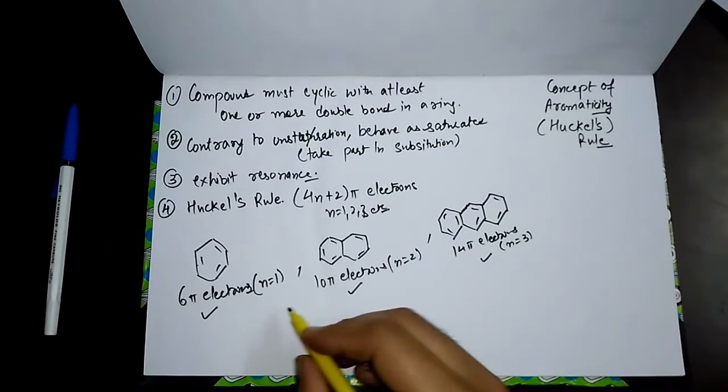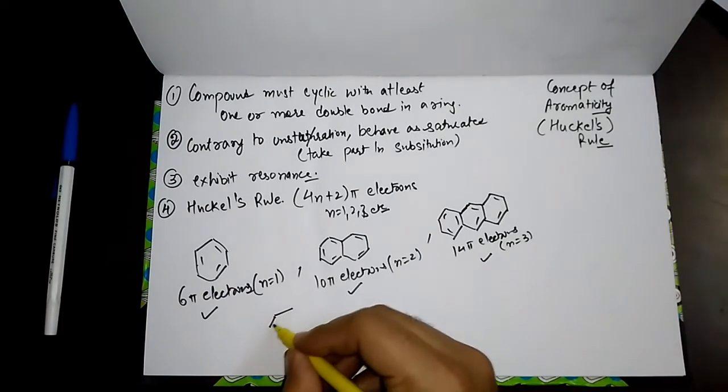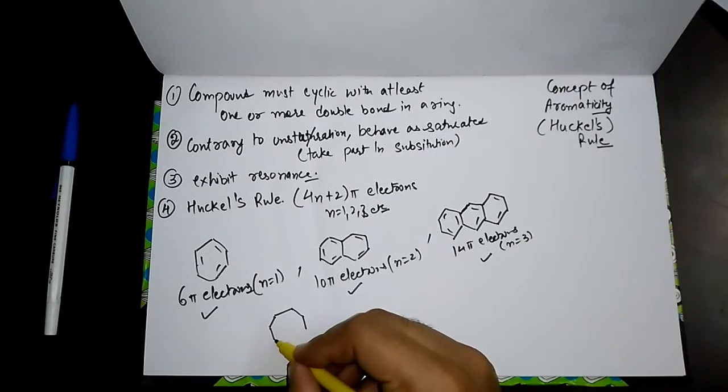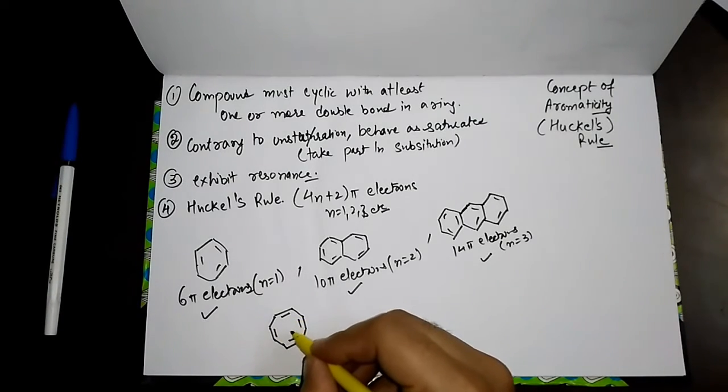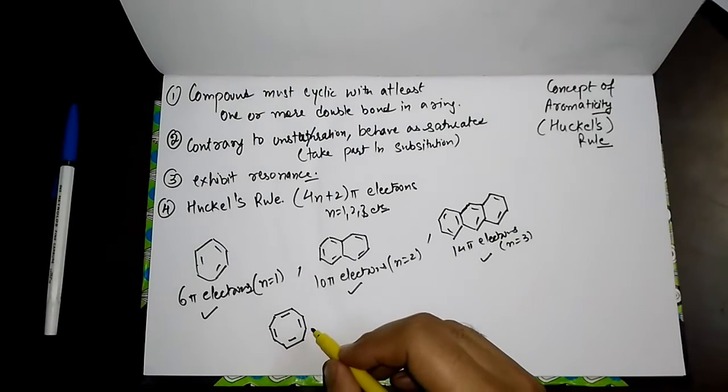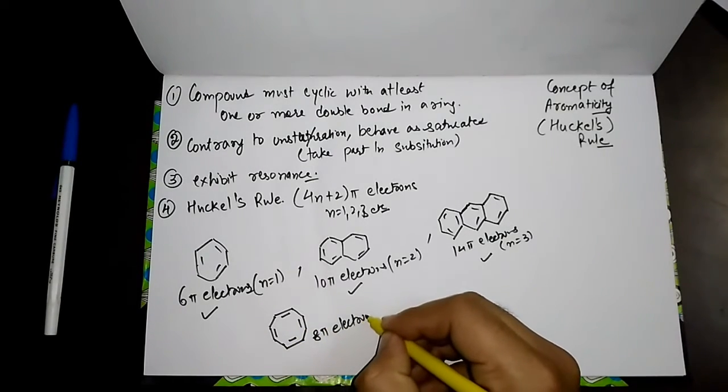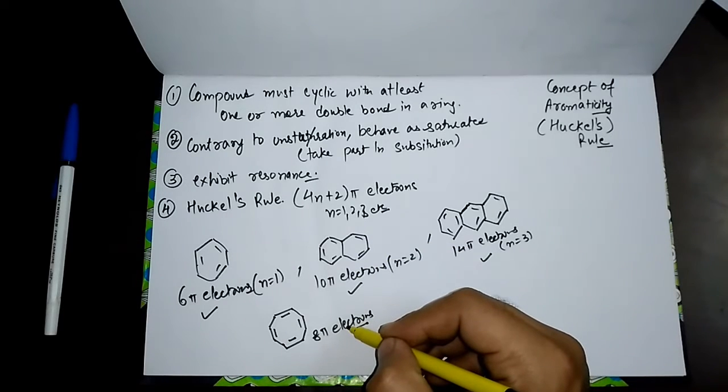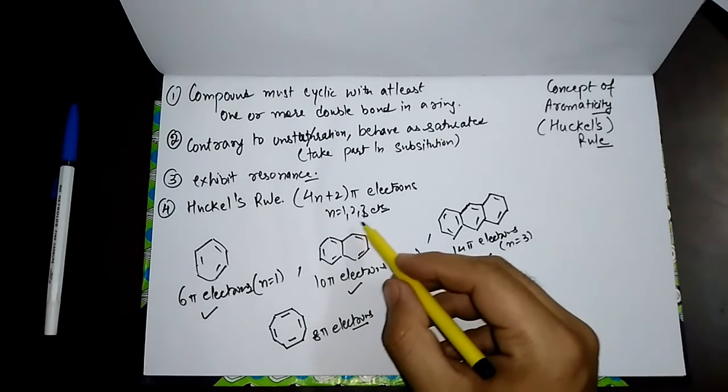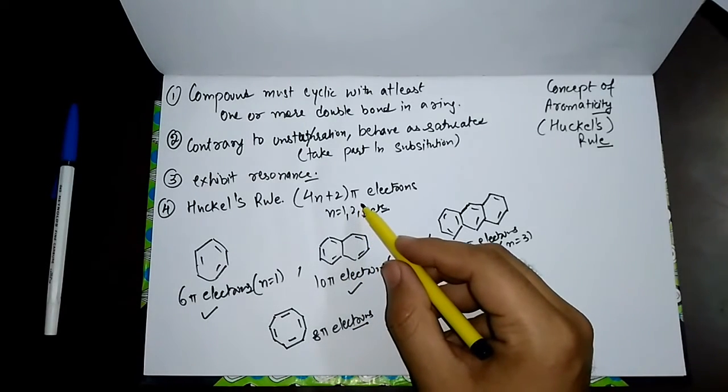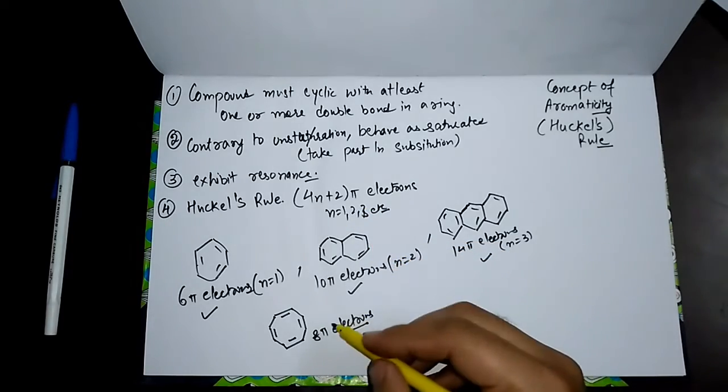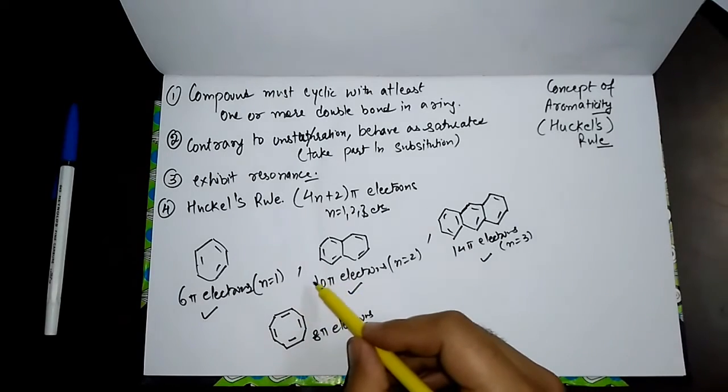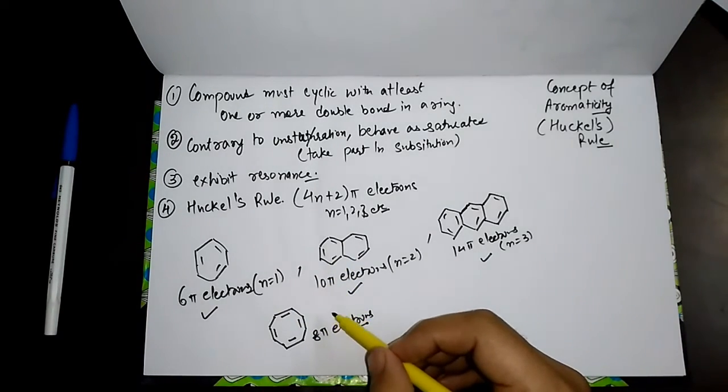If I draw a structure in such a manner, will it be aromatic? Overall it's having 8 pi electrons. What will be the value of n to have 8 pi electrons? None of the values will satisfy this Huckel rule. If I place 2, it will be 10 pi. So 8 pi is not available, so it does not obey Huckel rule.